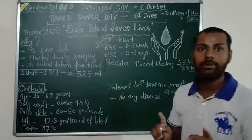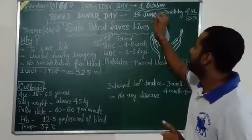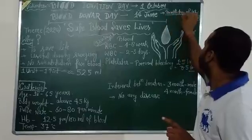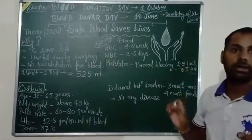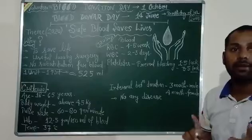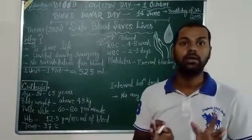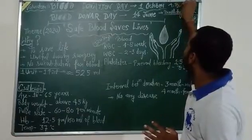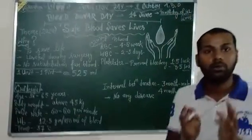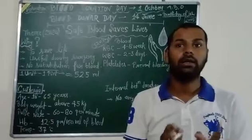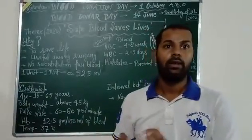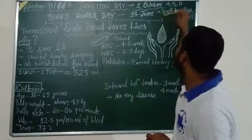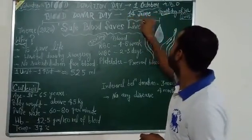Blood Donor Day is celebrated on 14th June because that is the birthday of Karl Landsteiner. Karl Landsteiner is the scientist who discovered the blood groups — A, B, O, and AB. The blood groups were discovered by Karl Landsteiner, and his birthday is 14th June.